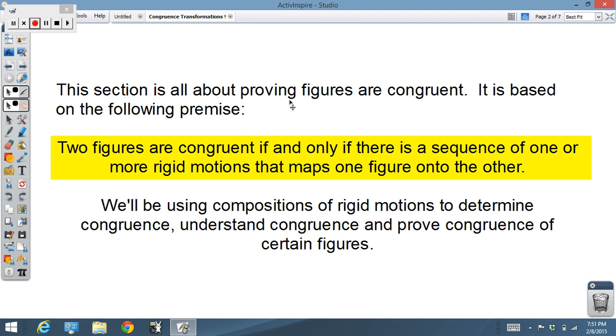Basically what we're doing in this section is all about proving figures are congruent. It's based on this following premise: two figures are congruent if and only if there is a sequence of one or more rigid motions that maps one figure onto the other. So if we can make some rigid transformations that move, rotate, translate, reflect one figure so that it pops onto another one, we know the two figures must be congruent.